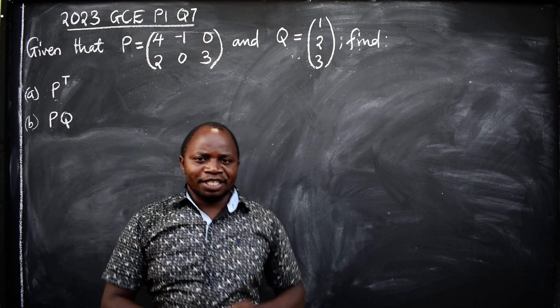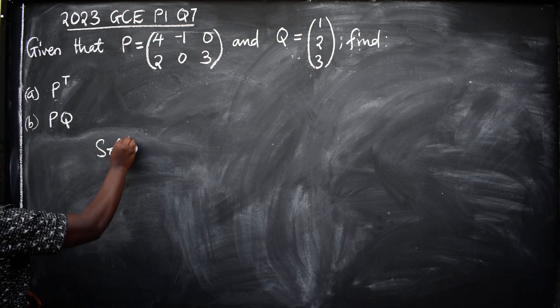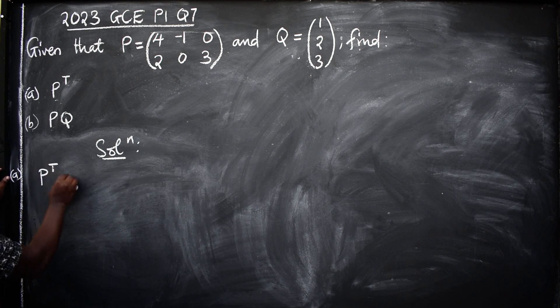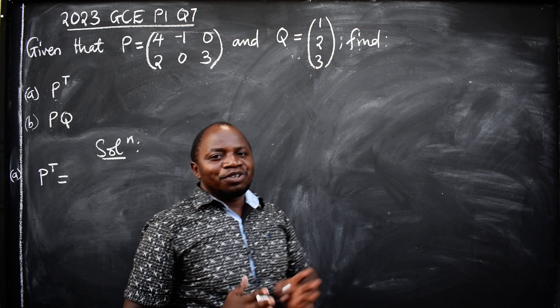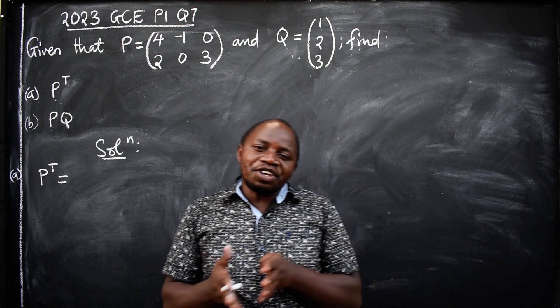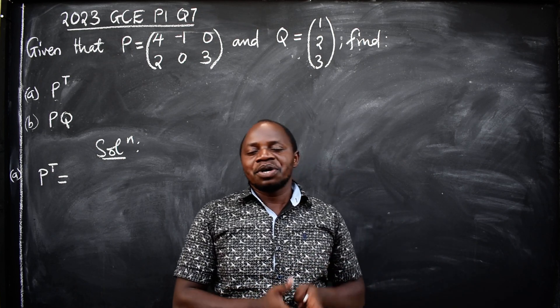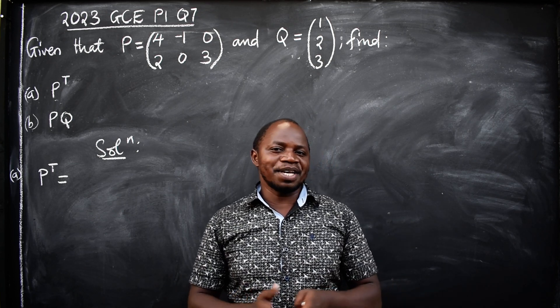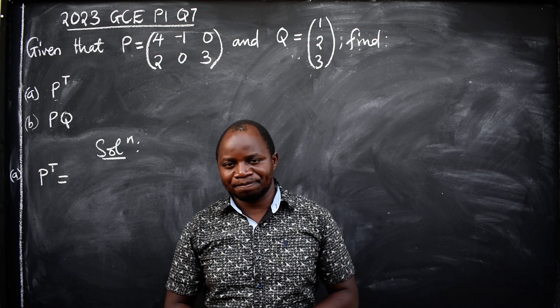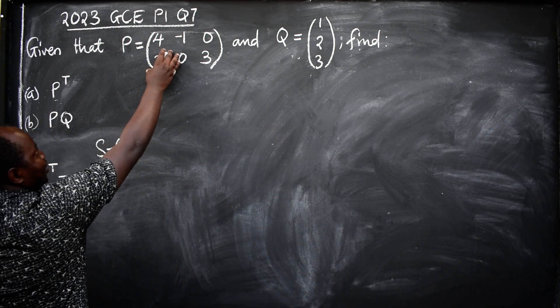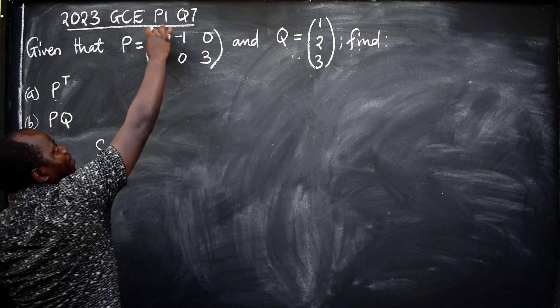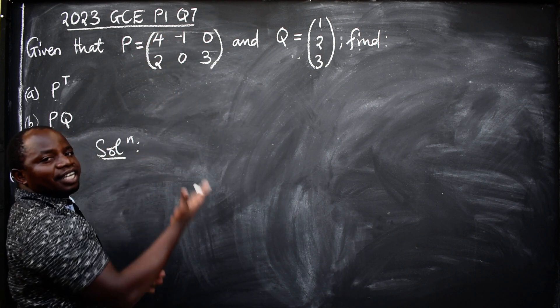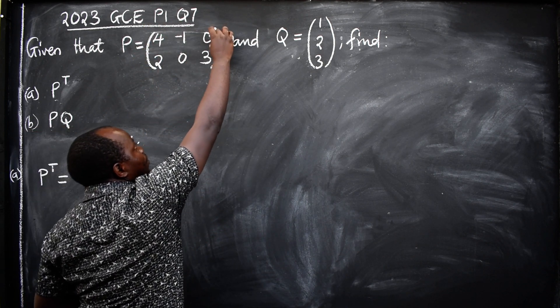But what does it mean? Solution part A, P transpose equals... When they say you transpose a matrix, they are asking you to interchange rows into columns or columns into rows. That is the meaning of transposing a matrix. So this is the matrix we want to transpose. We have the first row, this is the row, second row.